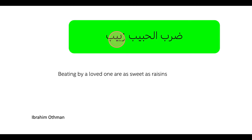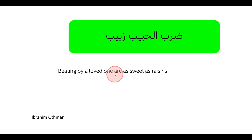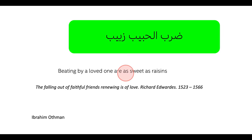Our third and final idiom is ضرب الحبيب زبيب, meaning 'beating by a loved one is as sweet as raisins.' That's what we say in Arabic, and we have something similar written by Richard Edwards around 1523: 'The falling out of faithful friends is the renewing of love.'